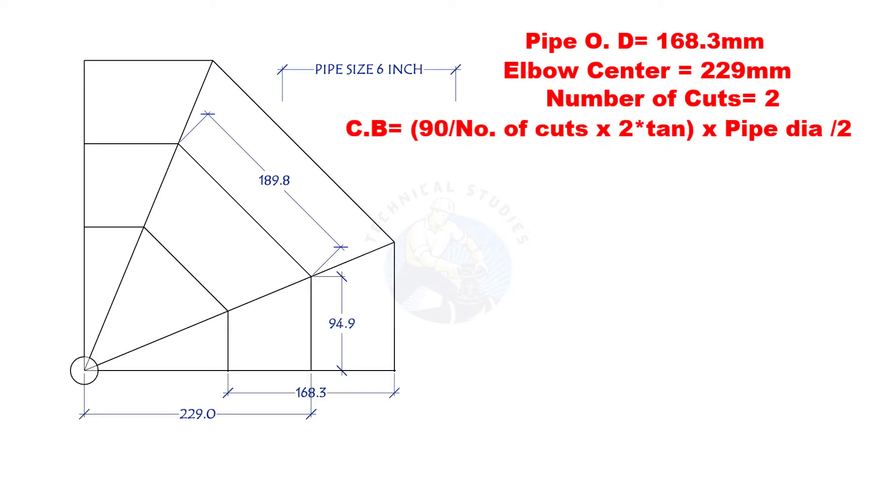Cutback is 90-degree divided by number of cuts into 2 multiplied by the half OD of the pipe. Half OD of the pipe is 84.15 mm. Number of cuts into 2 equals 4.